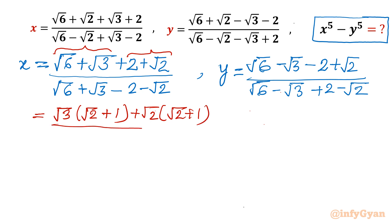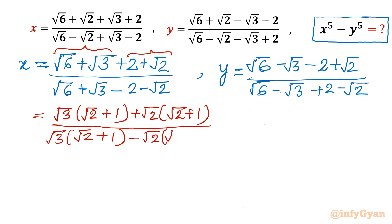Now for the denominator, similarly we take √3 common giving (√2 + 1) in brackets, then take minus √2 common giving (√2 + 1) again. So we can cancel (√2 + 1) from numerator and denominator straight away.